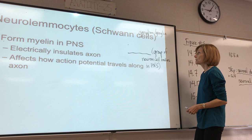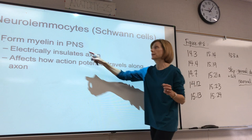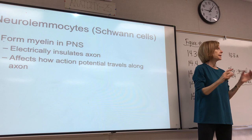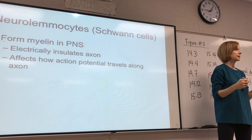One more type of neuroglial cell in the PNS is the neurolimocyte, also called a Schwann cell. These are the cells that form myelin in the PNS — same substance, it electrically insulates the axons and will affect how the action potential travels. The oligodendrocytes form it in the CNS; Schwann cells form it in the PNS.